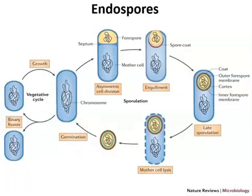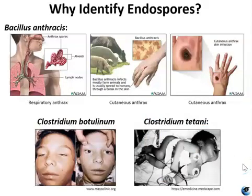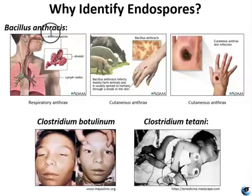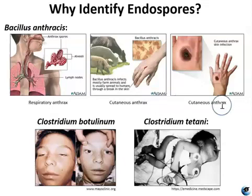Be sure to read in the text about all of these stages and how the cortex, forespore, and spore coat are formed. Endospore staining is an important technique for identifying Bacillus and Clostridium — two genera of endospore-producing bacteria that contain clinically significant species. For example, Bacillus anthracis causes respiratory and cutaneous anthrax, and its spores are of particular concern as a potential bioterrorism agent.